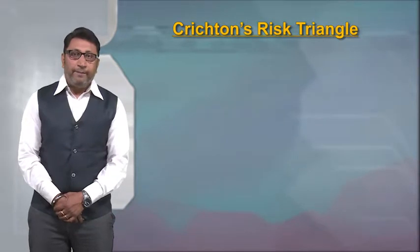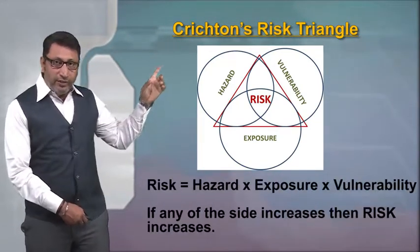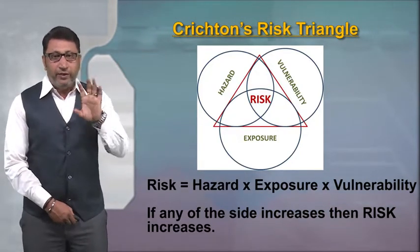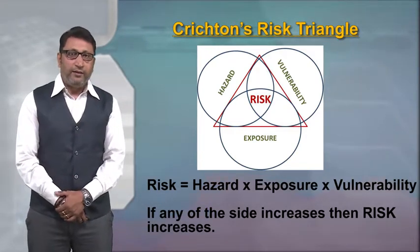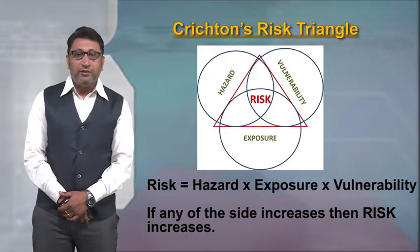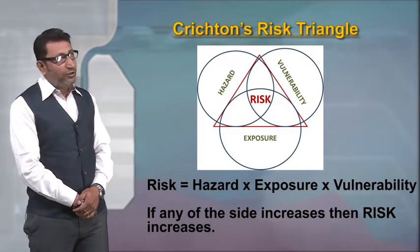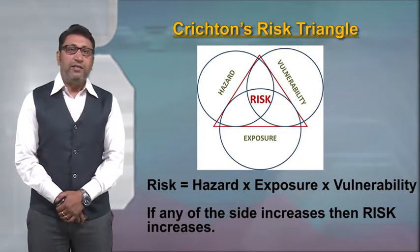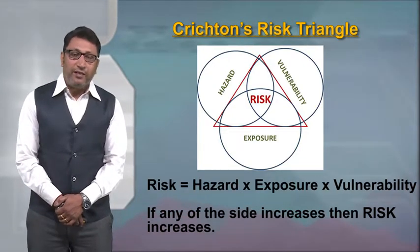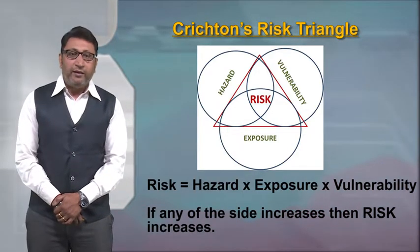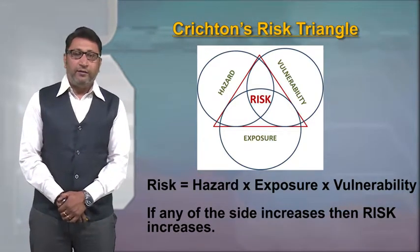To understand the extent of risk, Crichton has given us a risk triangle which is easy to understand. The equation suggests that risk is the product of hazard, exposure and vulnerability. In the triangle, each side represents one of these three important terms in disaster. Hazard on one side, vulnerability on another, and exposure on the third. At the intersection of these three sides lies risk. So risk is decided by the combination of all three factors — if any one side increases, the risk increases because the area of the triangle increases.